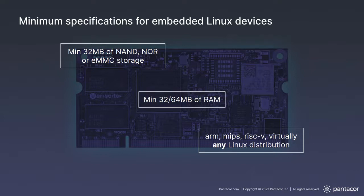We can agree that minimum specifications for an embedded Linux device today might look something like this — and this evolves. Maybe last year I would have said 16 megabytes of NOR flash. We're seeing a bunch of routers go to 128 megabytes of NAND storage; some even have eMMC. But most embedded devices are still in the lower range — a lot of them at a flash translation layer. Our usual architectures are ARM, MIPS, RISC-V. And whatever Linux distribution fits your needs — whether Yocto, OpenEmbedded, a vendor reference build, or OpenWrt for routers.